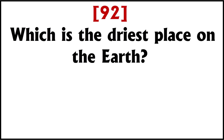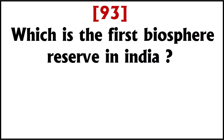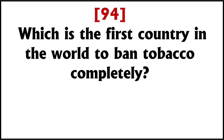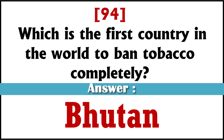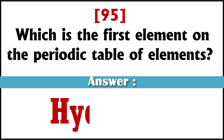Which is the driest place on Earth? Atacama Desert, Chile. Which is the first biosphere reserve in India? Nilgiri Biosphere Reserve, Tamil Nadu. Which is the first country in the world to ban tobacco completely? Bhutan. Which is the first element on the periodic table of elements? Hydrogen.